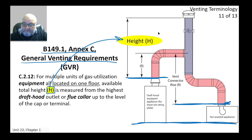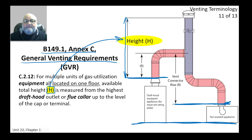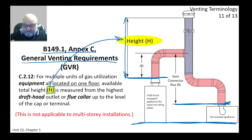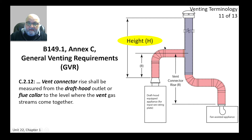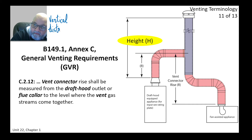Height is measured up to the level of the cap or terminal. This can be a source of confusion — knowing where to start measuring. This does not apply to multi-story installations. Also remember: the vertical distance is called 'height' only for the main vent.